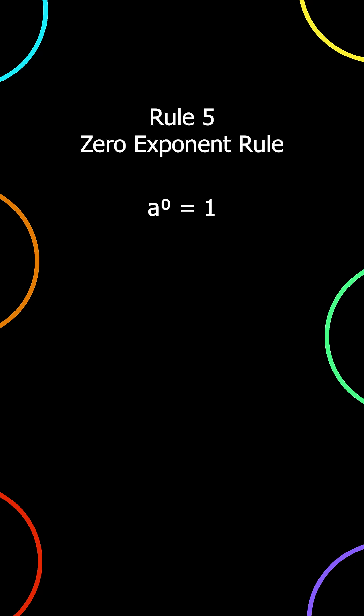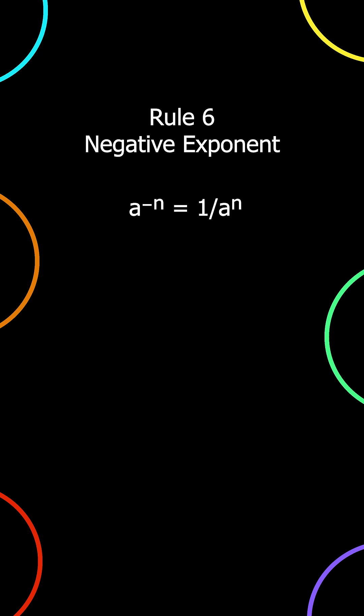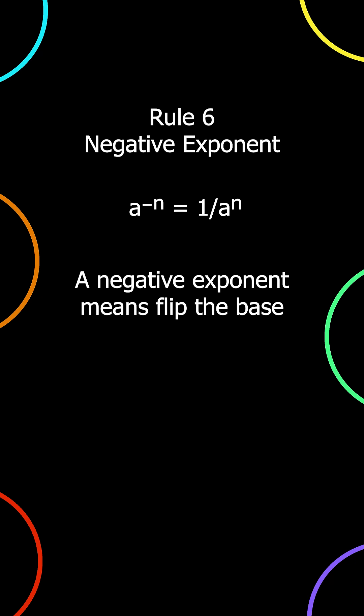Rule 5: Zero exponent rule. a to the power of 0 is equal to 1. Any number to the power of 0 is always 1. Rule 6: Negative exponent rule. a to the power of negative n is equal to 1 divided by a to the power of n. A negative exponent means flip the base. Example: 2 to the power of negative 3 is equal to 1 divided by 2 to the power of 3.